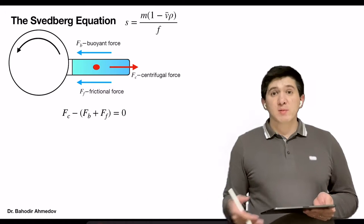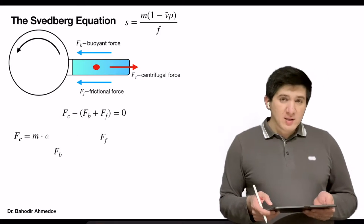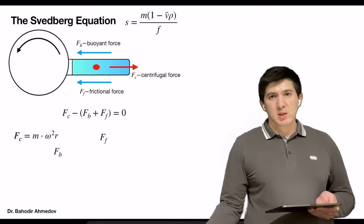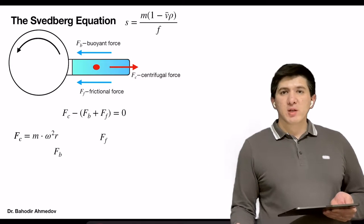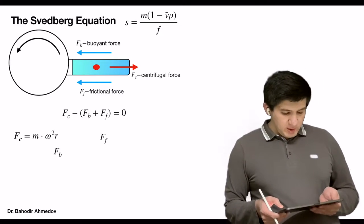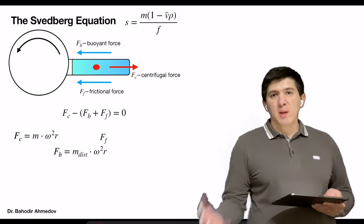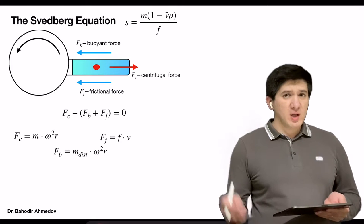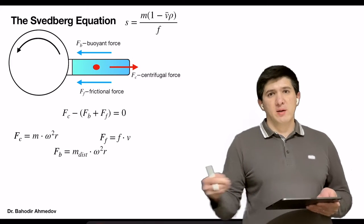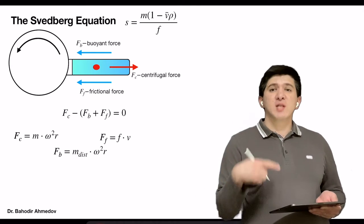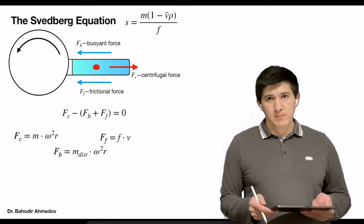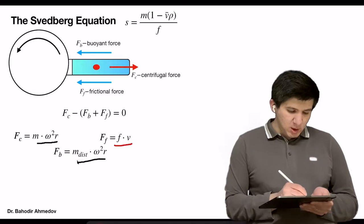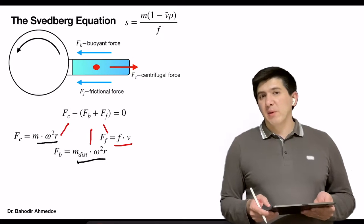Now I would like to write down the description of each of the forces. The centrifugal force, as we did before, can be calculated by multiplying the mass of a particle by the radial acceleration, which is equal to the angular velocity squared times the radius. The buoyant force is calculated as the weight of the fluid displaced by a particle times the radial acceleration. And the frictional force is essentially the friction coefficient — which depends on the fluid and particle — times the velocity at which we are rotating the tube on a centrifuge. I would like to put all of these descriptions into the equation and try to simplify the terms.